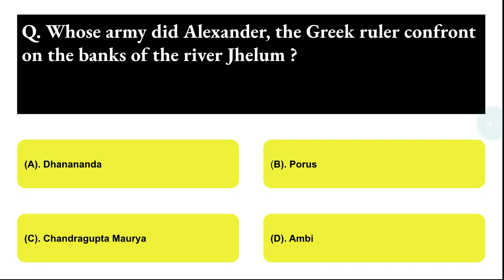Next question: whose army did Alexander the Great confront on the banks of the river Jhelum? Option A: Anananda, Option B: Purges, Option C: Chandragupta Maurya, Option D: Ambi. The correct answer is option C, that is Chandragupta Maurya.